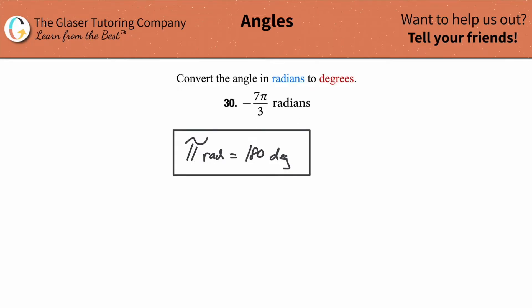So first step here, after I know that relationship, is I'm going to write down my given: negative 7 pi all over 3. And it's radians. But remember, this I'm going to just move into the numerator because we can. Multiplying something by radians is the same thing as having radians in the numerator.